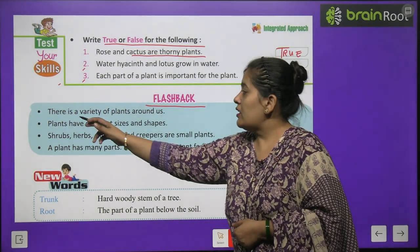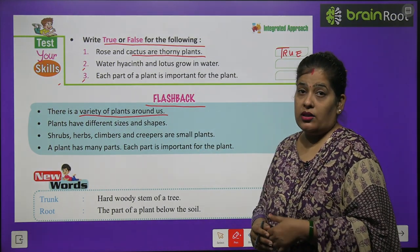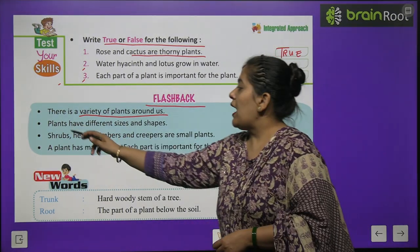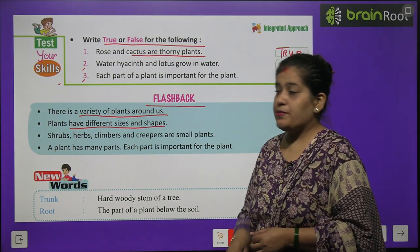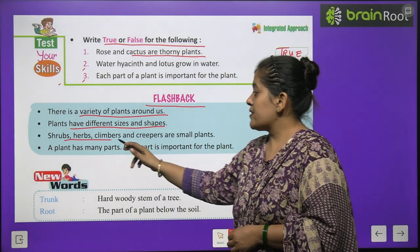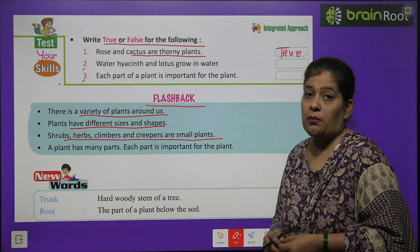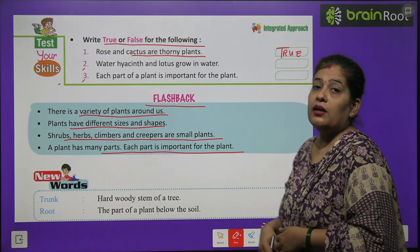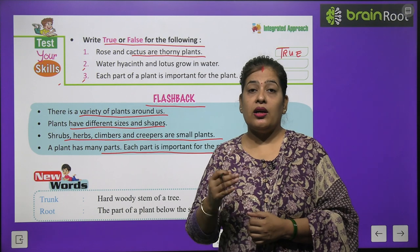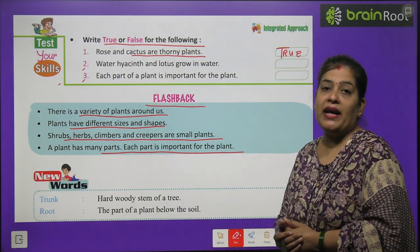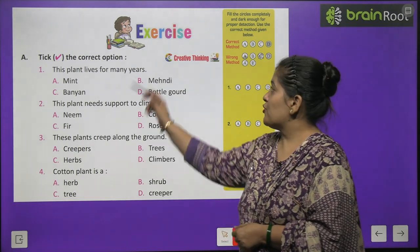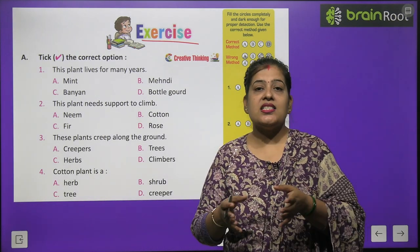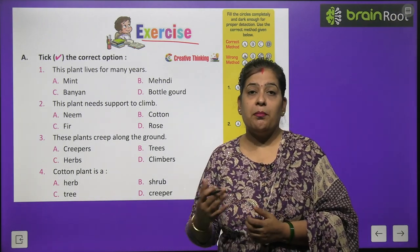Now time for a flashback. There is a variety of plants around us. Plants have different sizes and shapes. Shrubs, herbs, climbers and creepers are small plants. A plant has many parts and each part is important for the plant.